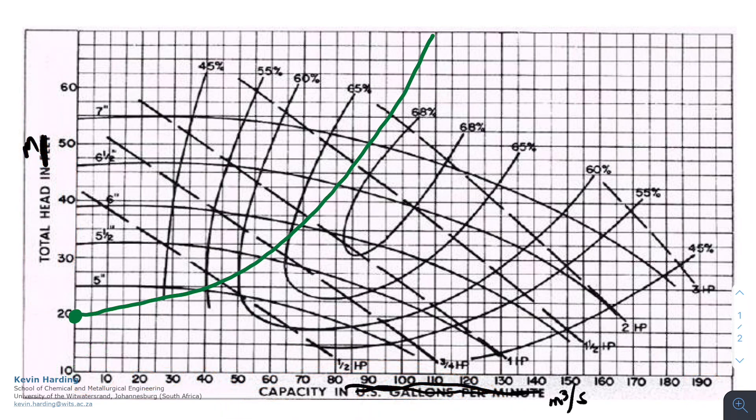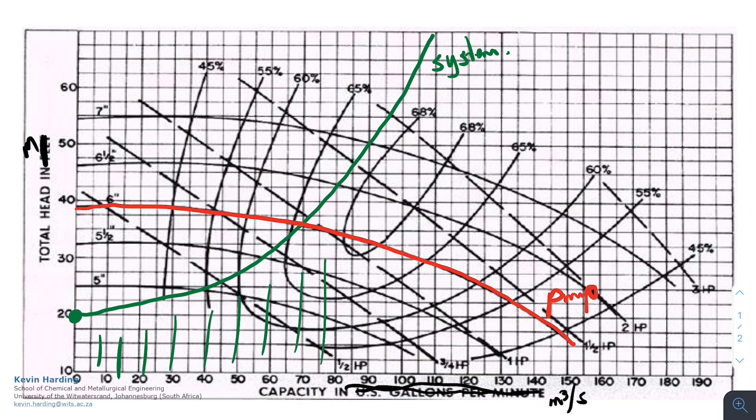What we now have is our system curve. So the green one is our system curve. This relates to what happens in our actual system and has nothing to do with the pump. We have, however, plotted it onto the pump curve. And if our pump curve is the one that I'm highlighting in red, we can now determine the operating point.